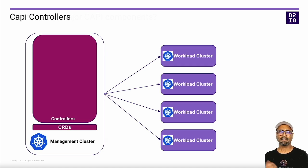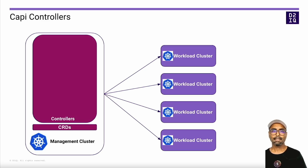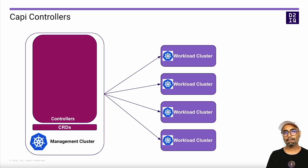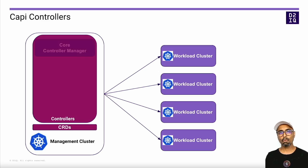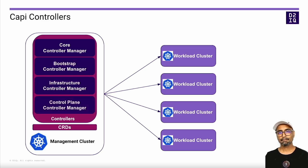Once the CAPI components are deployed to the management cluster, you simply pass the infrastructure specs in the form of CAPI CRDs and the CAPI controllers will take care of the rest. The main controllers used by CAPI fall into the categories of core, bootstrap providers, operators, infrastructure providers, and control plane providers. The last three providers are completely replaceable.